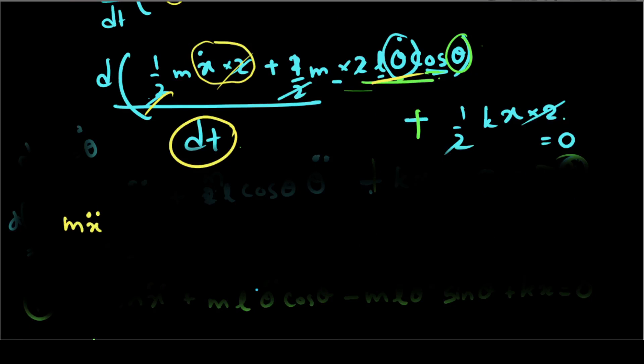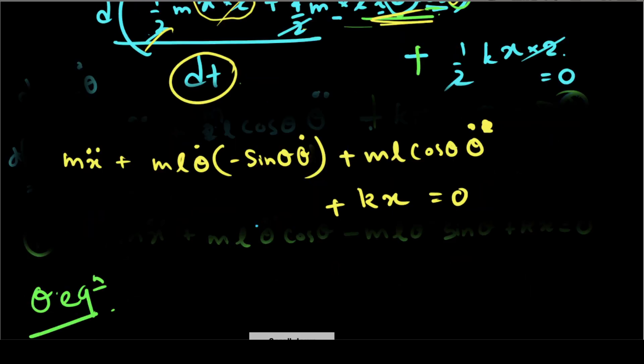So we will see m x double dot. When we add theta, if we add mL theta dot, minus theta, then we add alpha, alpha dot. Then we get mL cos theta, theta double dot, and Kx.